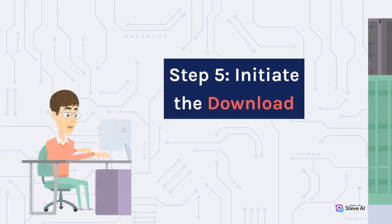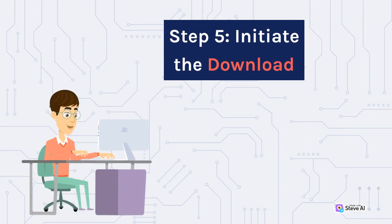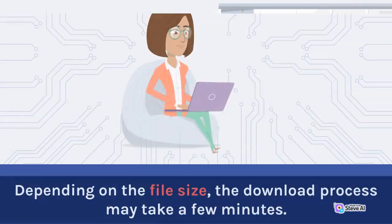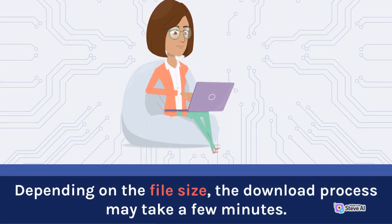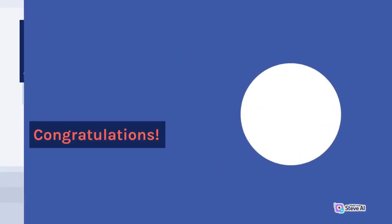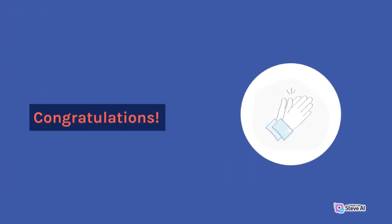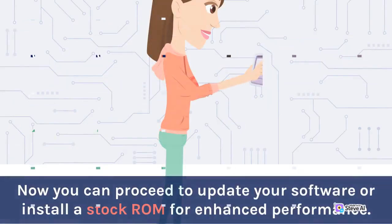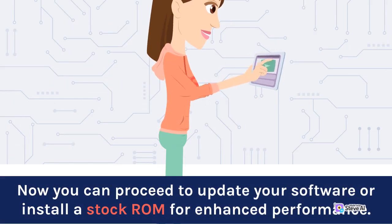Step 5: initiate the download. You have successfully downloaded the flash file firmware for your device. Now you can proceed to update your software or install a stock ROM for enhanced performance.